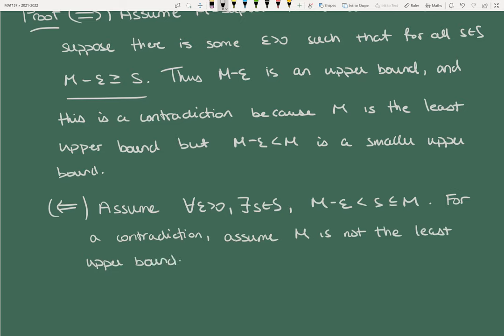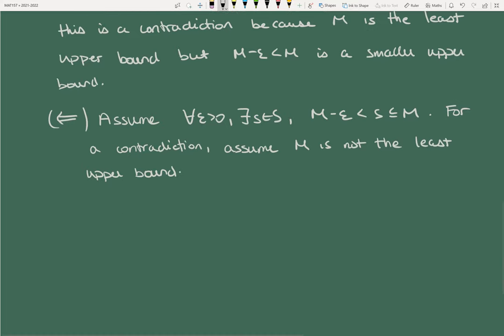This is the dual argument. If when I reach to the left I can't grab elements of S, there must be a gap between me and S. So let epsilon = M − sup S, which is strictly positive because S is the least upper bound and smaller than all other upper bounds. If M is not the least upper bound, it must be bigger than the supremum, so M − sup S > 0. There's a gap, and that gap is epsilon.